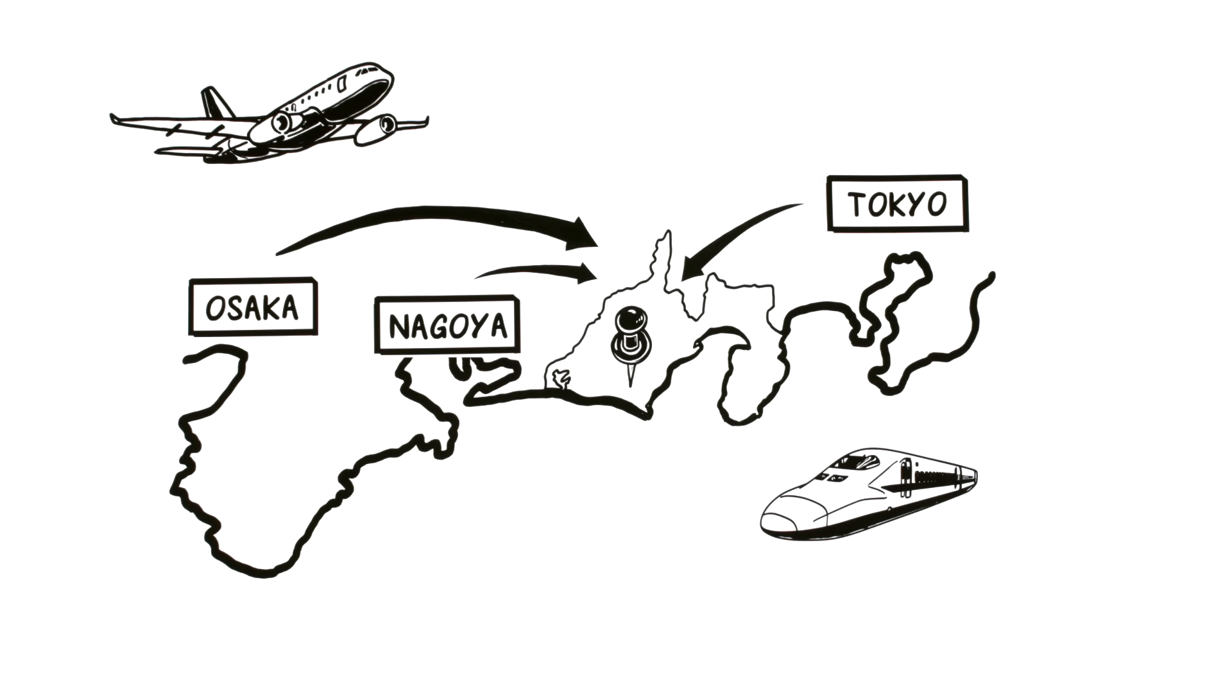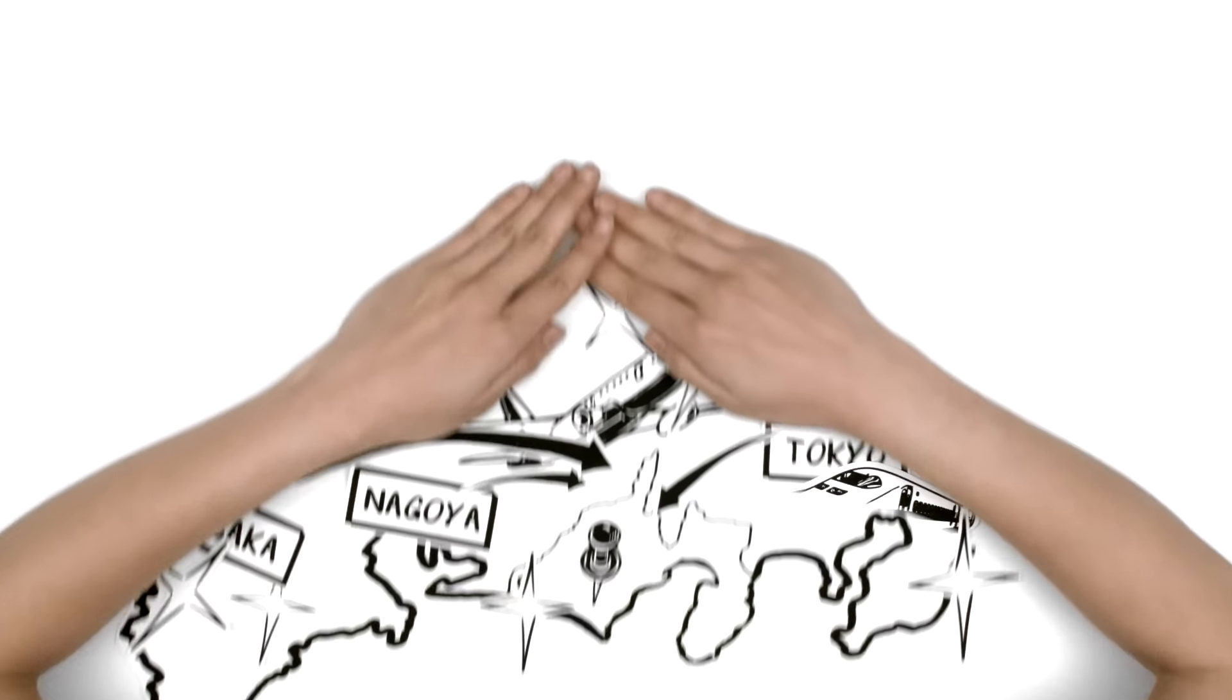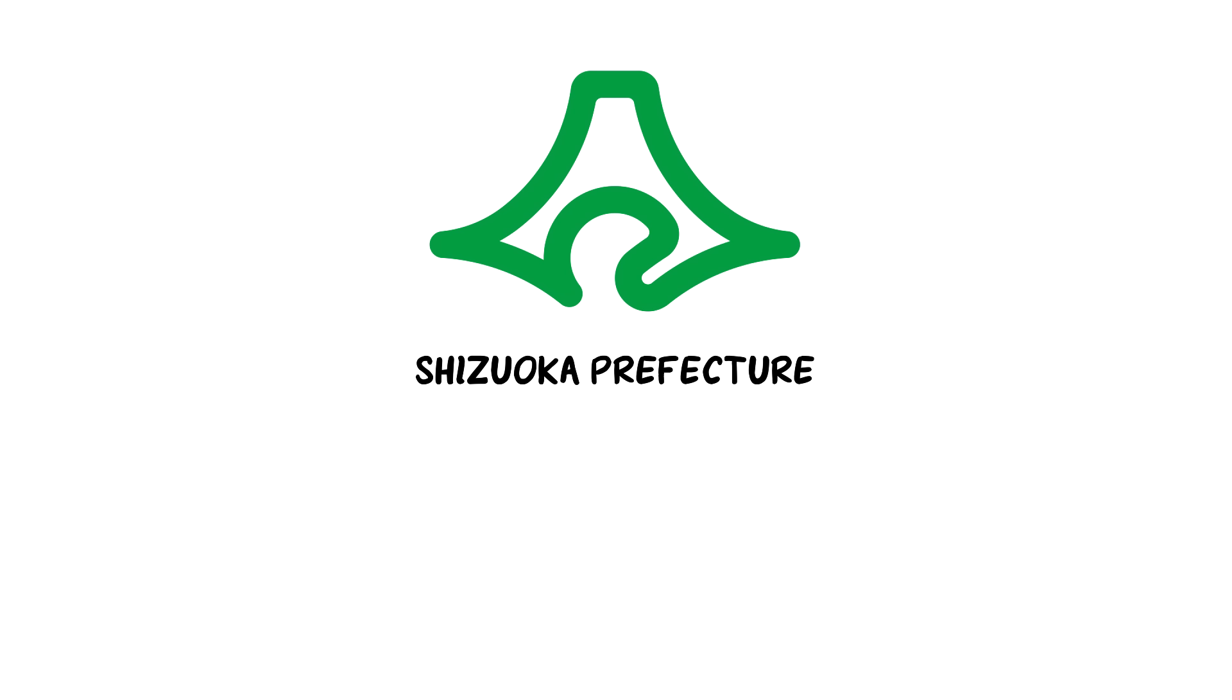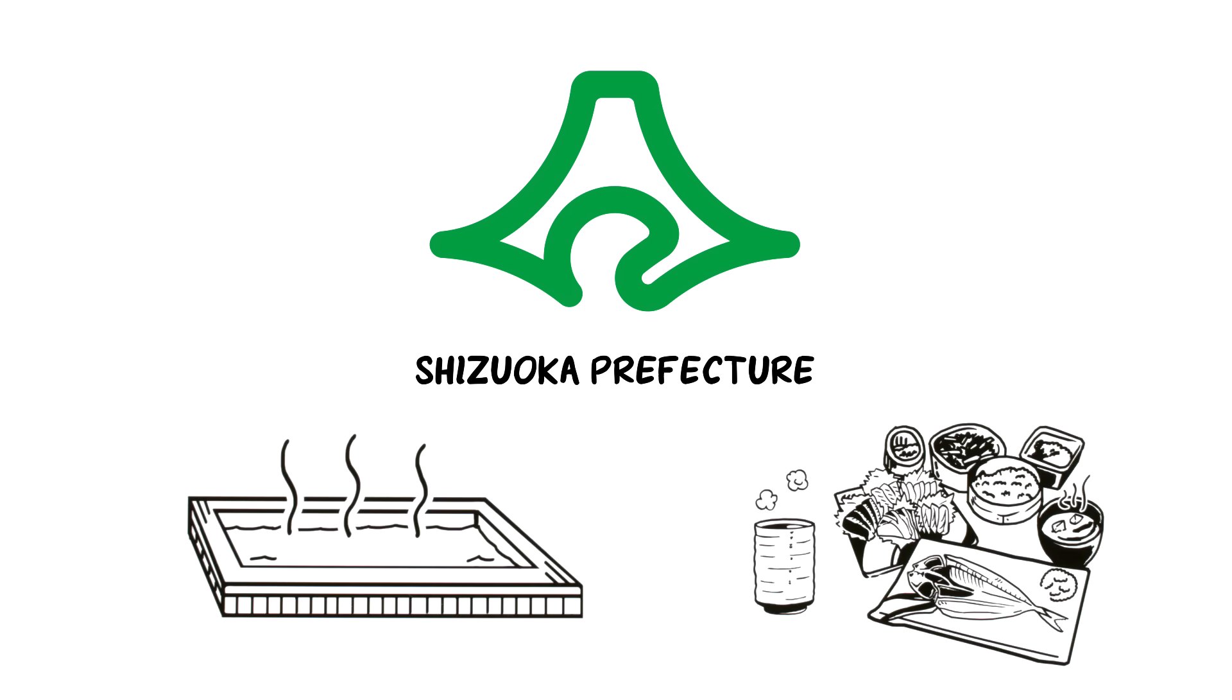You can reach Shizuoka easily by Shinkansen from Tokyo, Nagoya or Osaka. Even faster is to fly to Shizuoka airport.